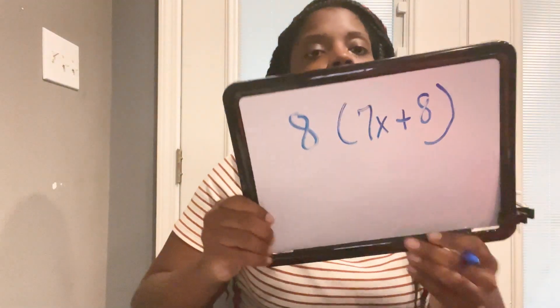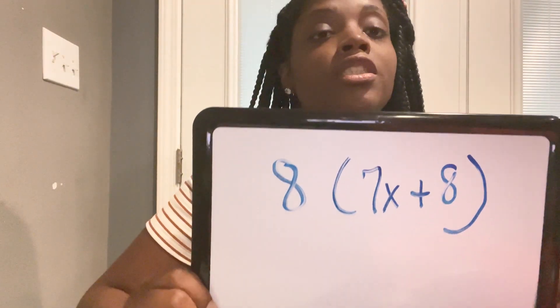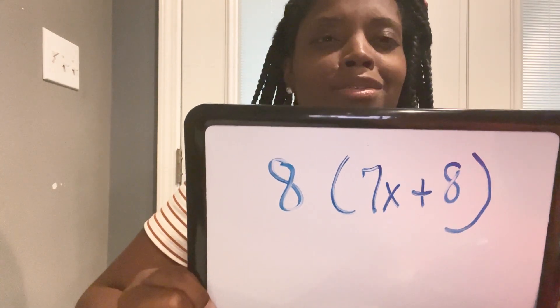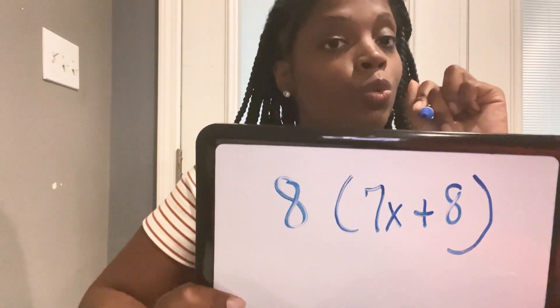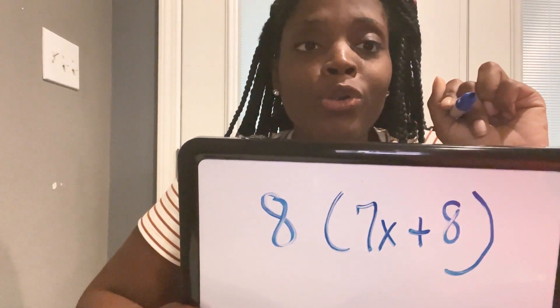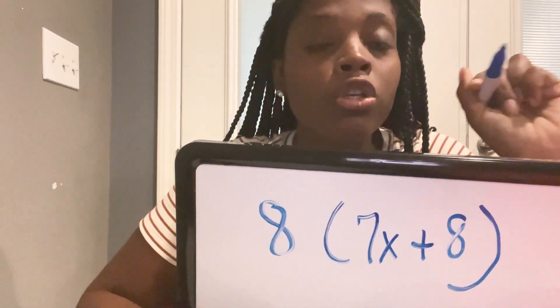I want to show you guys something — I saw so many of these on the exam. This is called the distributive property. You want to hand the 8 out to everybody inside the parentheses — you're going to multiply the 8 times everybody. Remember this clue: if you see a number right next to a number in parentheses, that means you have to multiply.